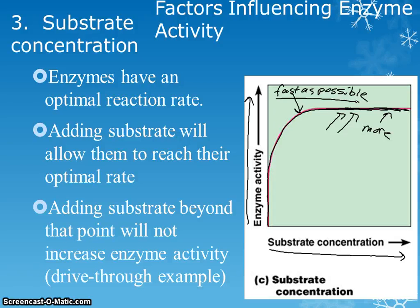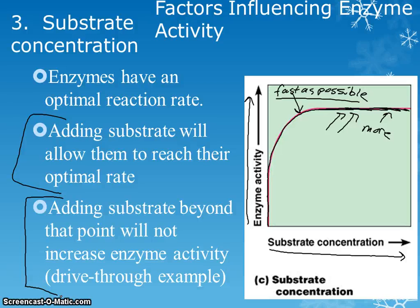Right at this point on the graph, enzymes are working as fast as they can. It doesn't matter if you keep adding more and more substrate — they're already working as fast as possible. Adding substrate allows enzymes to reach their fastest rate, but if you keep adding beyond that, you just create a backlog. You have to wait because they're working as fast as they possibly can.